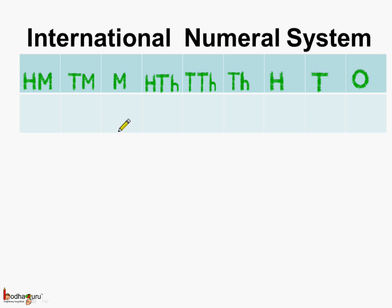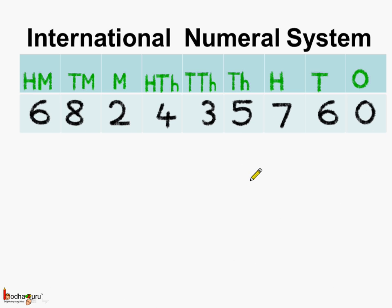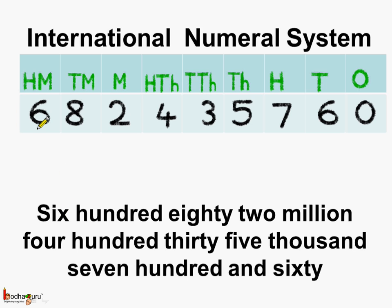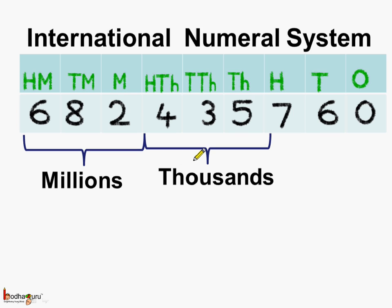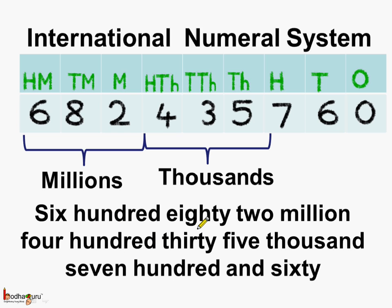Now let us read the same number according to the international numeral system. The place values are: ones, tens, hundreds, thousands, ten thousands, hundred thousands, millions, ten millions, and hundred millions. We read it as six hundred eighty-two million, four hundred thirty-five thousand, seven hundred and sixty. It's not difficult if we read the millions group and thousands group together.